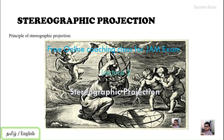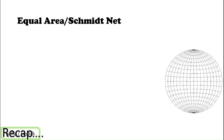As today's video is on the practical, you will skip that portion. I will give a general recap from our previous video, and if you want to know more you can check that video — I will share the link in the description. We are going to use the equal area net, also known as the Schmidt net, for our practical purpose. We will be placing a tracing sheet over this and doing all plots on the tracing sheet.